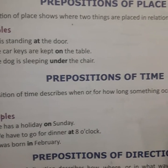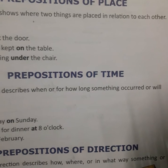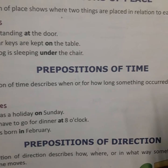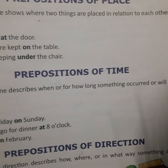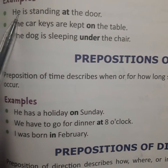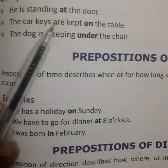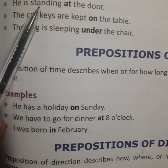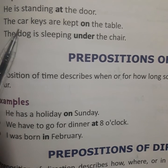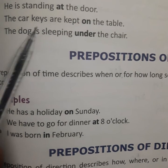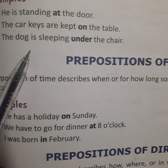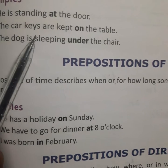Prepositions of place show where two things are placed in relationship to each other. Prepositions of place कौन सी होती है? जिसके अंदर दो चीजों का एक दूसरे से relation बताया जाता है. For example: 'He is standing at the door.' He is the pronoun — he is standing at the door, ये कहां खड़ा है? Door पे. So, it is preposition of place — ये जगह के बारे में बताता है. 'The car keys are kept on the table.' Table पे हैं — preposition of place. 'The dog is sleeping under the chair.' Chair के नीचे — this is preposition of place.